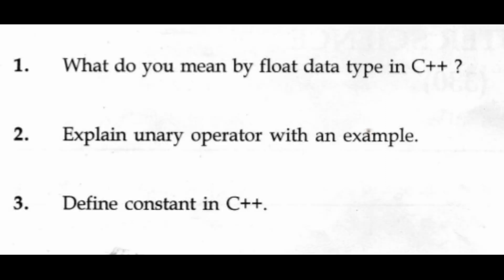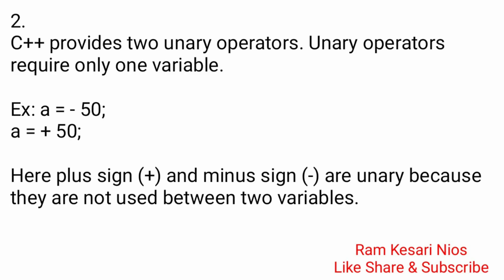Question 2: Explain unary operator with an example. C++ provides two unary operators. Unary operators require only one variable. Example: a = -50, a = +50. Here, the plus sign and minus sign are unary because they are not used between two variables.